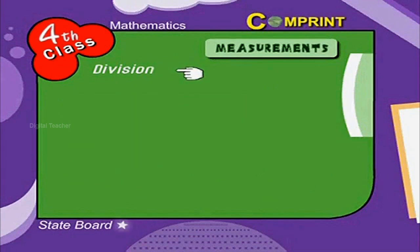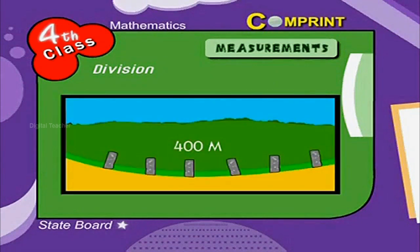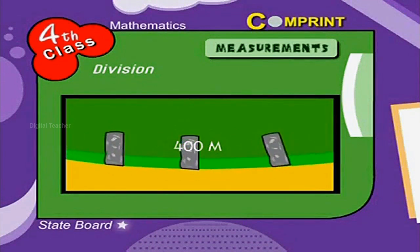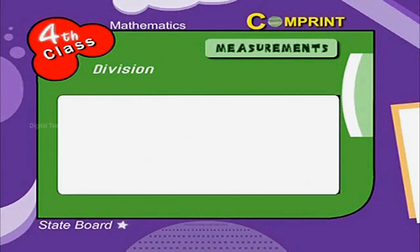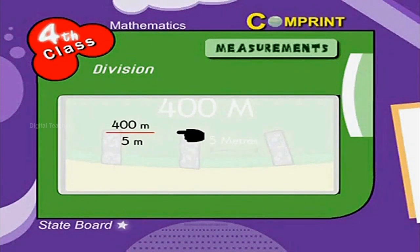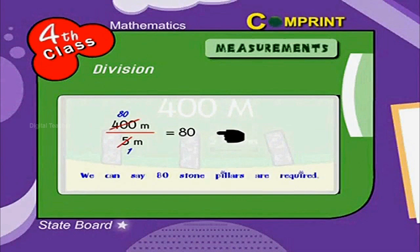Division: How many stone pillars are required to fence a border of length 400 meters with a gap of 5 meters? Here is the solution. At the end of every 5 meters a stone pillar is needed. 400 meters divided by 5 meters is equal to 80. Therefore, 80 stone pillars are required.